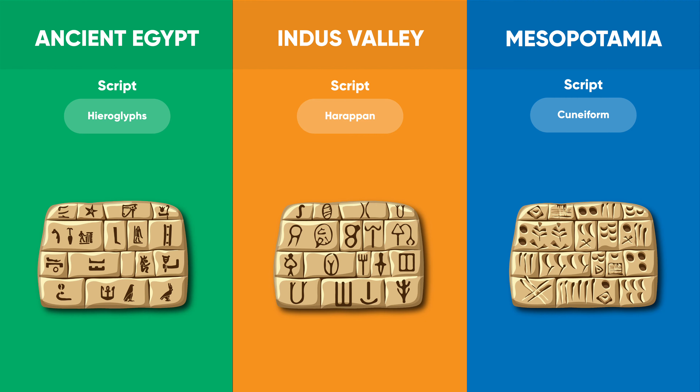The Harappan script was boustrophedon, written from right to left on one line and then from left to right on the next line. Cuneiform is a logo-syllabic script that was used to write several languages of the ancient Near East. The script was in active use from the early Bronze Age until the beginning of the Common Era.